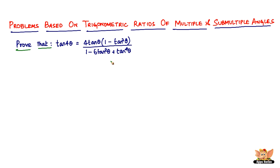If you're wondering where this comes from, don't take it directly. We're going to write tan(4θ) as tan(2 × 2θ), which makes the whole thing — if you take this entire thing as θ — it becomes tan(2θ). So you can write tan(4θ) as tan(2 × 2θ).